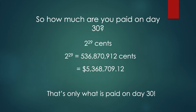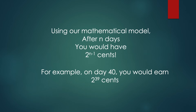So how much are you paid on day 30? It's 2 to the 29th cents, which amounts to over 5 million dollars — and that's only what's paid on day 30. After n days, you would have 2 to the (n-1) cents total. So on day 40, you would earn 2 to the 39th cents.